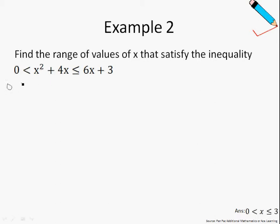On the left-hand side, or rather over here, I have x squared plus 4x is greater than 0, and the other inequality that I have to solve is x squared plus 4x less than or equals to 6x plus 3. Let us just work on the first inequality over here.